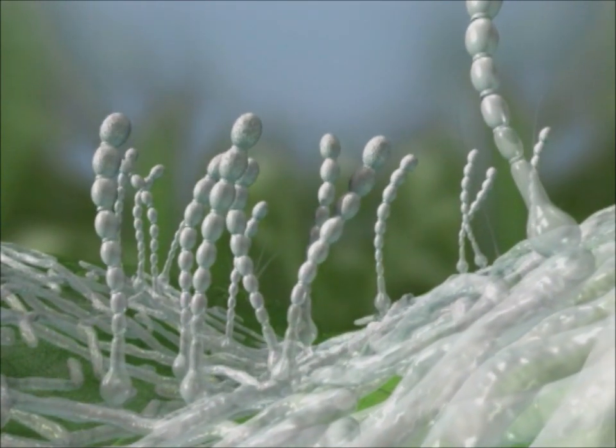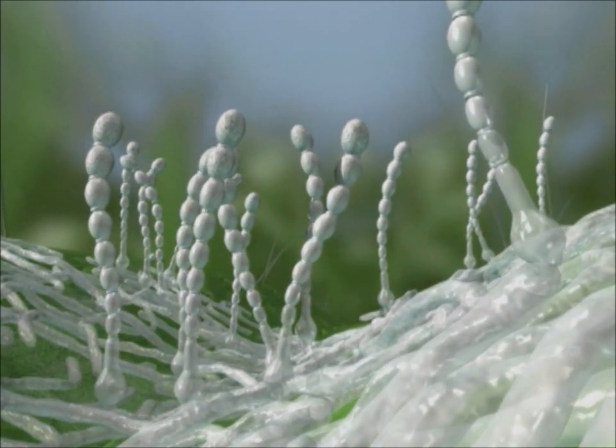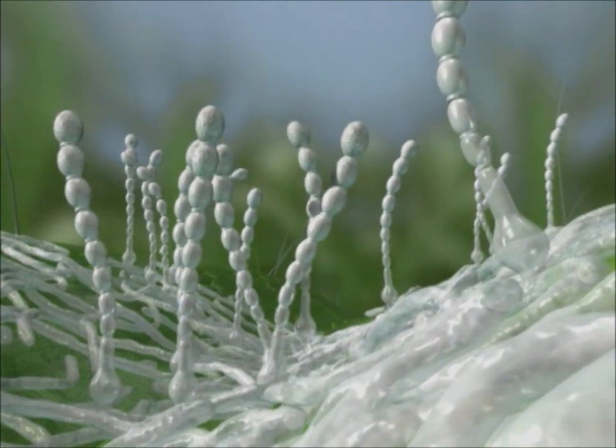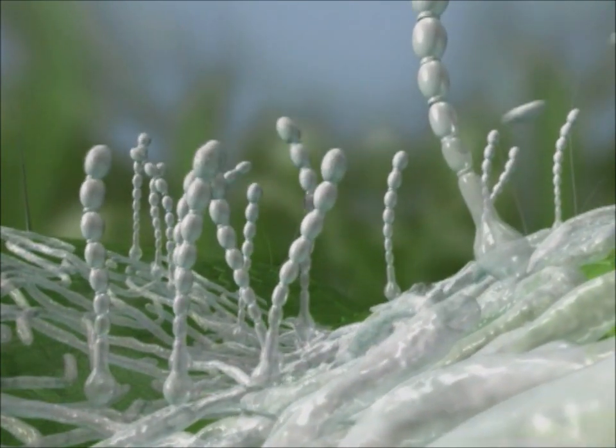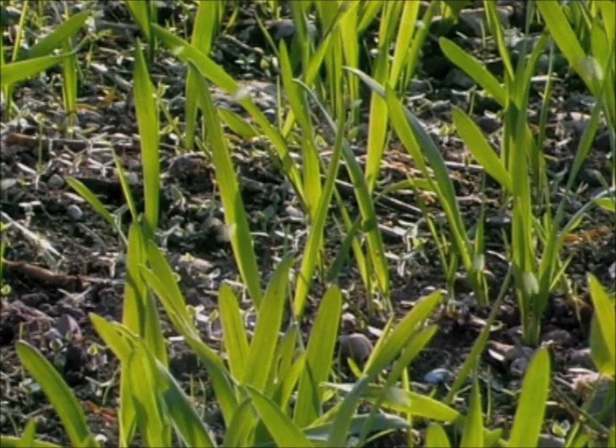Each spore chain consists of eight conidia spores. The terminal spore is the first to mature, is detached by the wind and carried away.